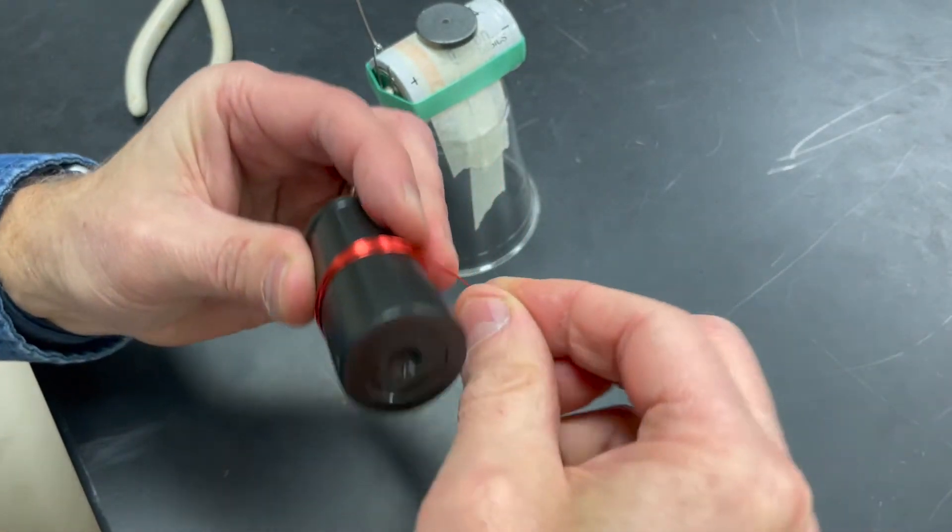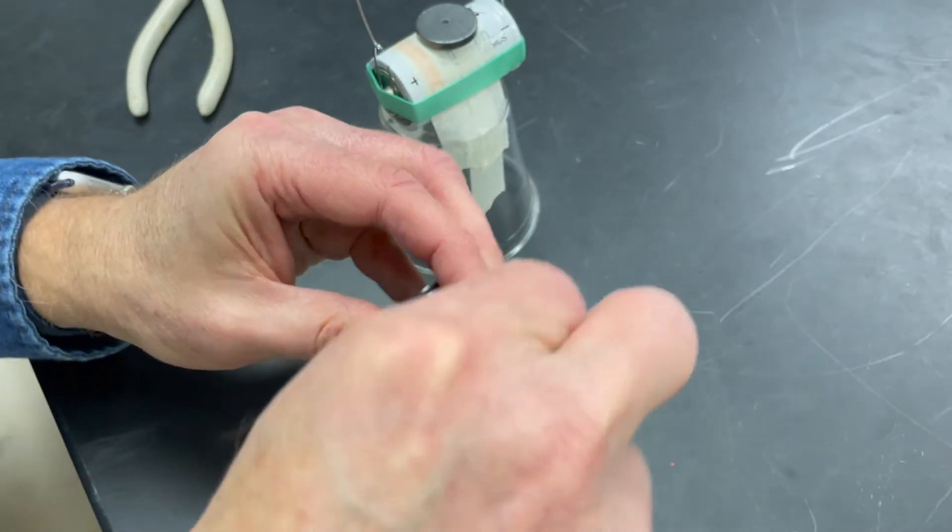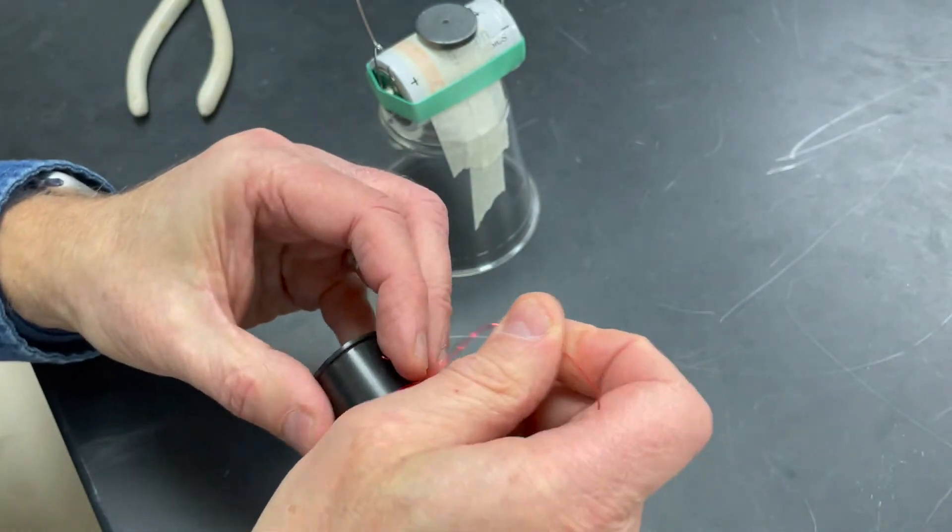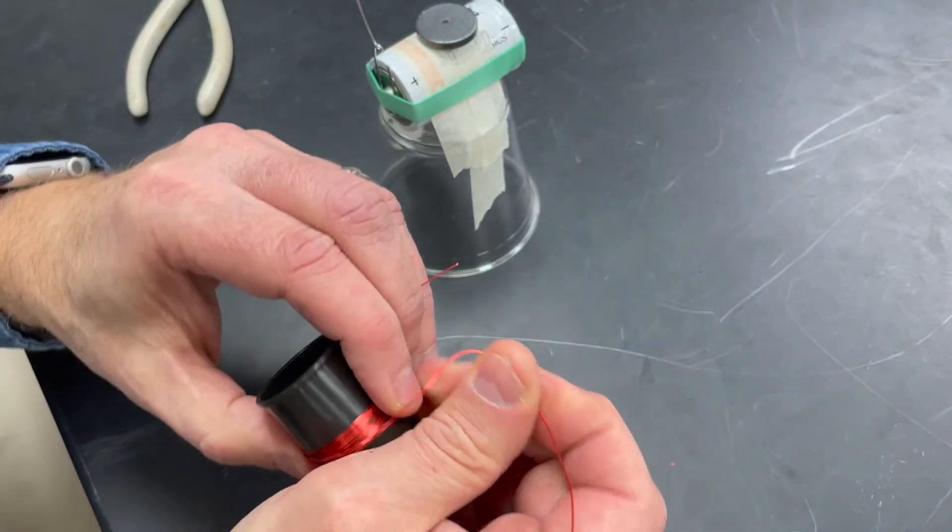You can use any round object, about one inch, a little bit more, a little bit less is fine. We want to leave about three inches of wire at both ends.